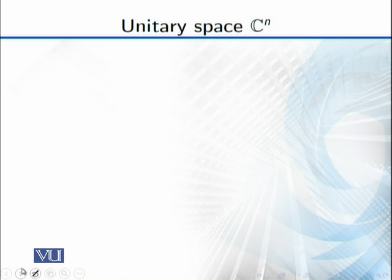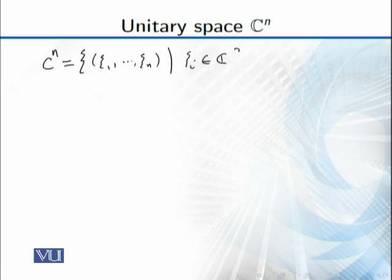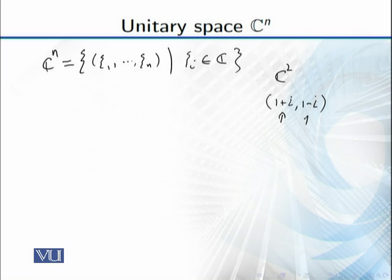Now Cⁿ, the unitary space. Cⁿ is defined similarly to Rⁿ, but the elements are n-tuples (z₁, z₂, ..., zₙ) where all zᵢ belong to the complex numbers. For example, if you have C², the elements are of the form (1 + i, 1 − i), where each entry is a complex number.